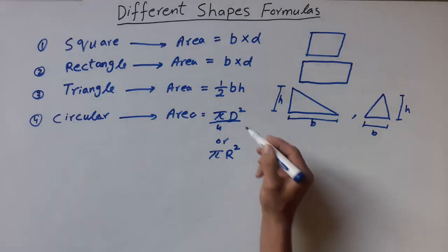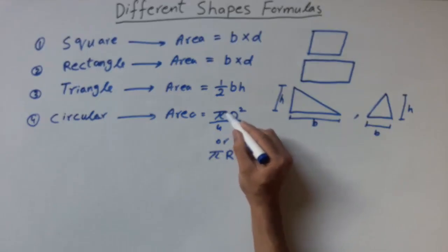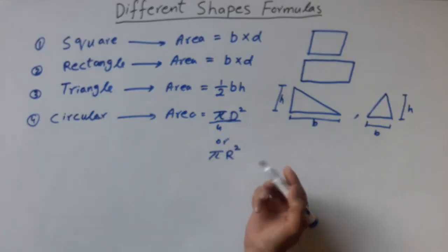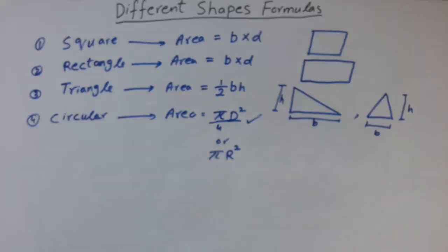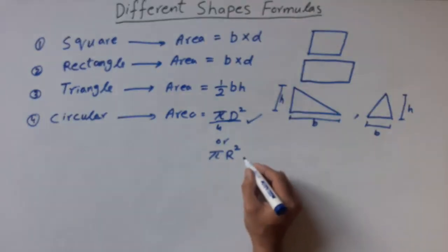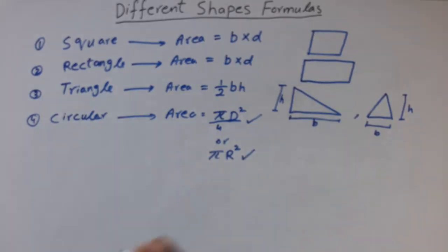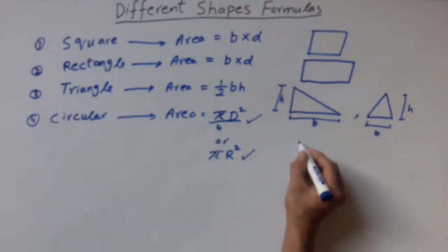Let me tell you the difference between them two. If we have given diameter, then we will use this formula. If we have given only radius, then we will use this formula.